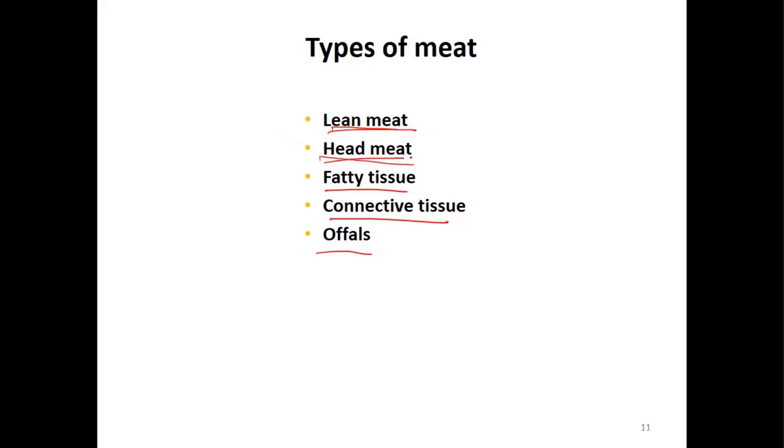Head meat is the meat from the head of the animal. Fatty tissues are all the parts with a lot of fat. What is the main component in fatty tissue? Fat. What is the main component in lean meat? The most abundant component in lean meat is water, and then proteins.